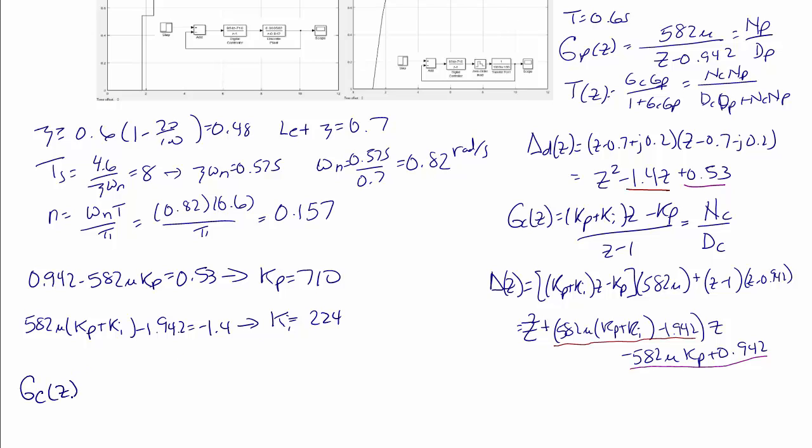So finally, our controller, which is what we have in our step response plots up here as well, is 710 for the proportional, plus 224 over z times over z minus 1 for the integral. Or combining the terms and getting a common denominator, this can be written as 934z minus 710 over z minus 1. And this concludes designing a PI controller.